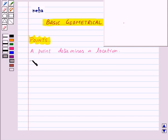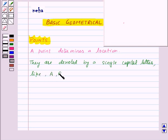They are denoted by a single capital letter, like A, V, X, etc. So here let us denote this point by the capital letter A. Now this is read as point A.